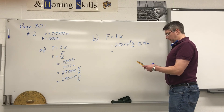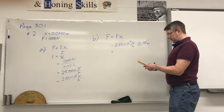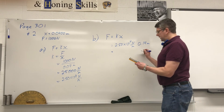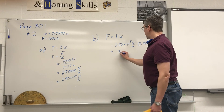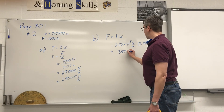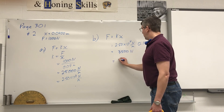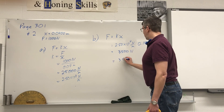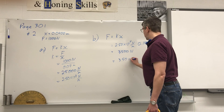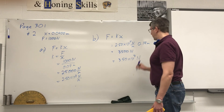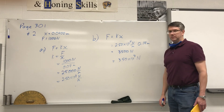So 2.50 times 10 to the power of 4 times 0.14 gives us 3,500 newtons, or 3.50 times 10 to the power of 3 newtons.